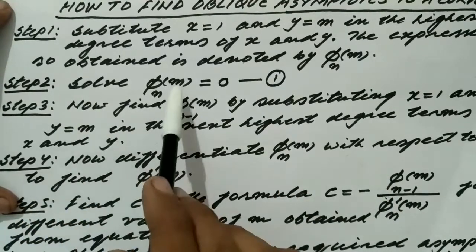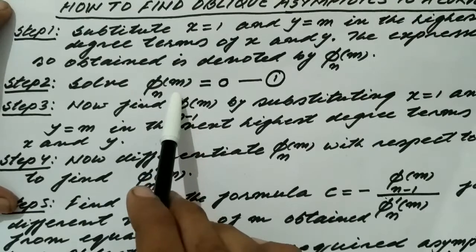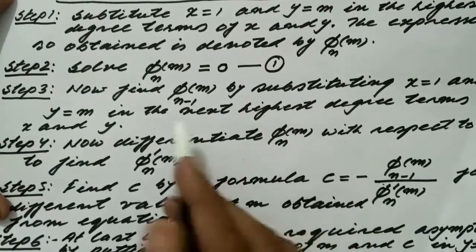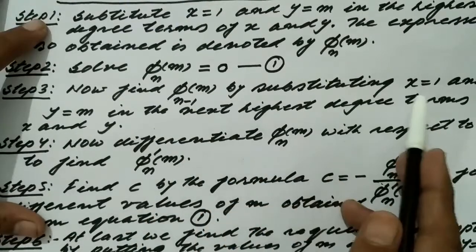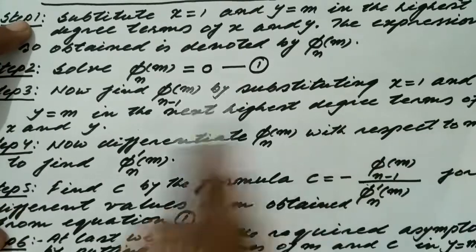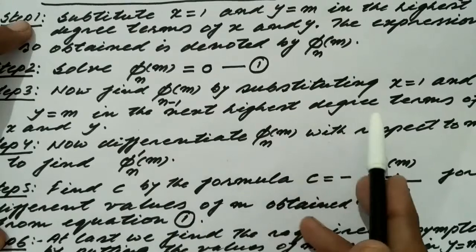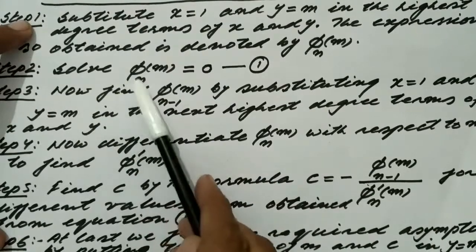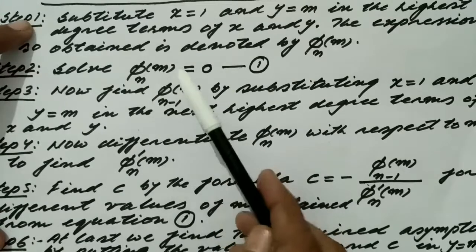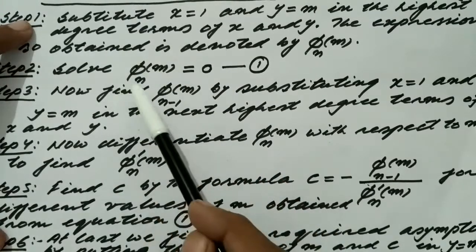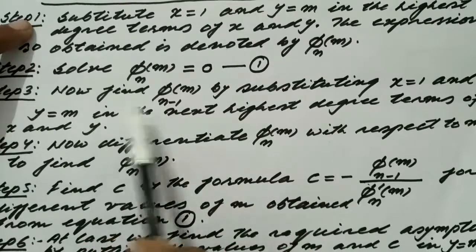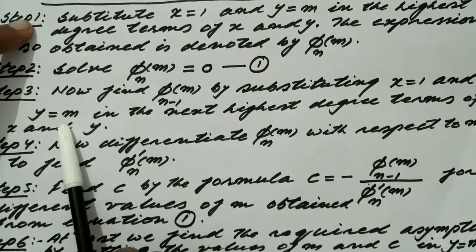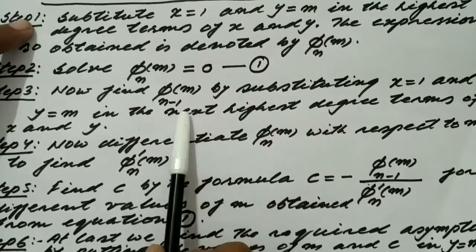Step 3: find φₙ₋₁(m) by substituting x = 1 and y = m in the next highest degree terms — that is, the terms of degree n − 1. The expression so obtained is denoted by φₙ₋₁(m).